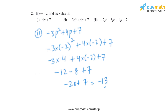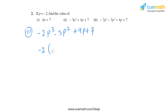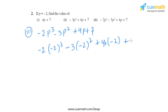In the third part, the expression given is minus 2p³ minus 3p² + 4p + 7. Putting p = -2, it becomes minus 2 into minus 2 cubed, minus 3 into minus 2 squared, plus 4 into minus 2, plus 7.